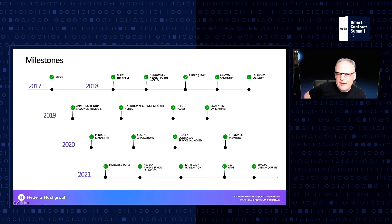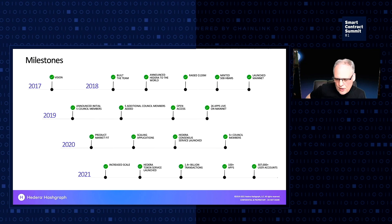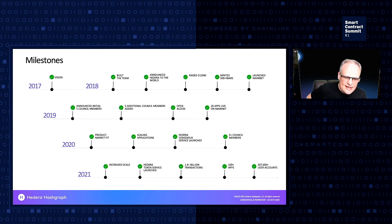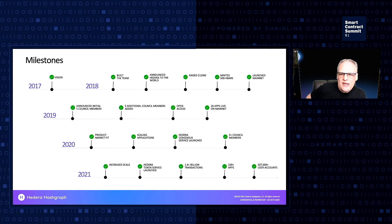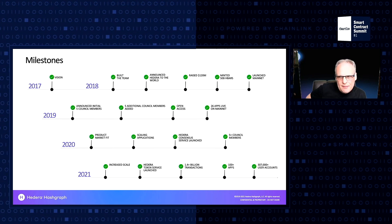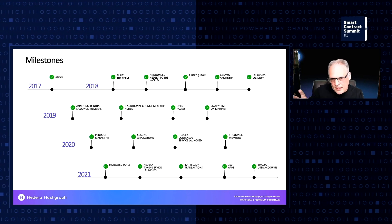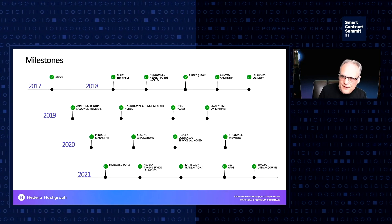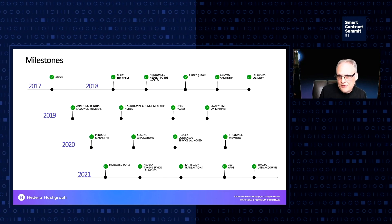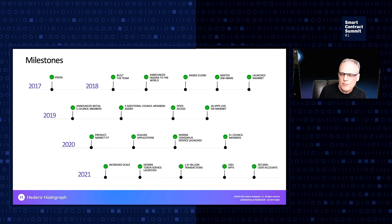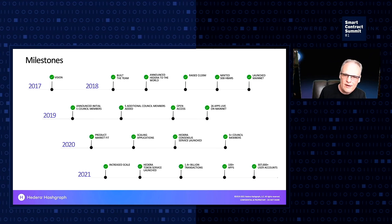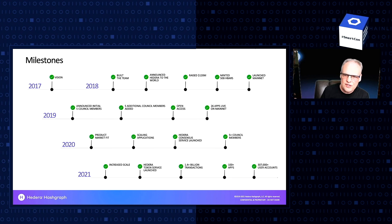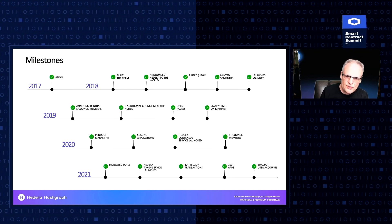When we think about the progress of Hedera: we got started in 2017, decided to create the project, and hired the initial team members. In 2018, we introduced the world to Hedera, raised a bunch of money, launched the network in a closed form — meaning only by invitation — and minted 50 billion HBAR. In 2019, we began to operationalize the council, adding our first five members in February and an additional five through the year. Then we opened the network later in 2019 for general access.